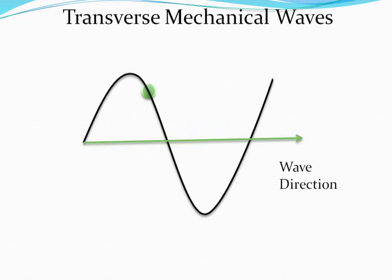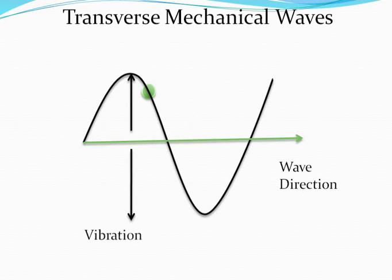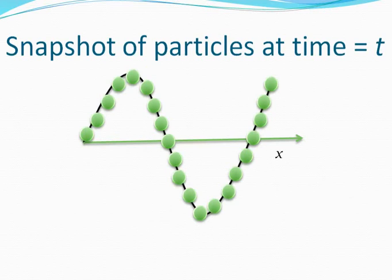Mechanical waves are of two types: transverse mechanical waves and longitudinal mechanical waves. The difference between them is simple. In case of transverse mechanical waves, the medium particles vibrate perpendicular to the direction of motion of the energy. So if energy is being transferred from left to right, in case of transverse mechanical waves, the particles move up and down. You can see one of the particles moving, but actually all the particles along this wave are moving up and down. If you took a snapshot of all these moving particles, you would see that all the particles are vibrating in such a way that if you join all the particles at any instant, the shape you get will be the shape of a wave.